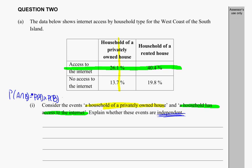So we have to test this. To test it, we need to figure out how to fill in the formula with the information we're comparing. We could say A is access to the internet, and B is whether the houses are privately owned or rented.